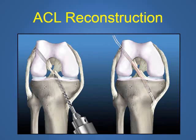This tissue, or graft, used to recreate the ACL can come from one of three different areas. It can come from a cadaver donor tissue, which is usually recommended for older or less active patients. Tissue can also come from your own knee, either from the patellar tendon or the hamstring tendons.